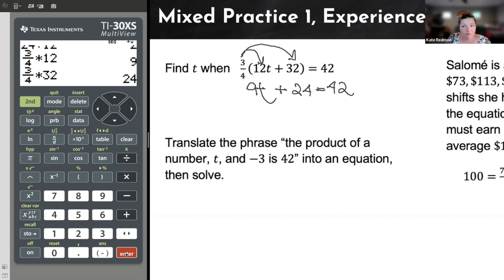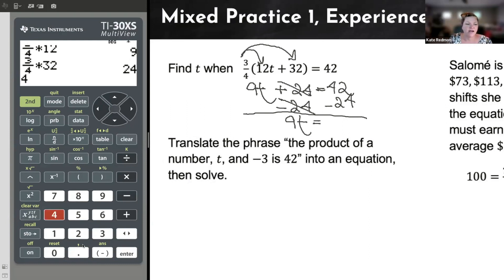And now you might say, well, Kate, this gave me a different equation. Yeah, different equation. But look, I'll get the same solution. All right. Take away anything adding or subtracting. 24 and 24 cancel on the left, leaving me with just 9t. And on the right-hand side, 42 minus 24, 18.